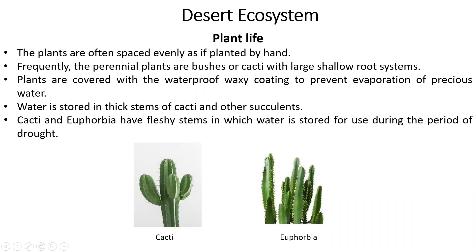Cactus and euphorbia are two different plants found in the desert. They look similar in appearance, but in the stem there is wood, and water is stored inside it — especially when drought comes and there is no rain.